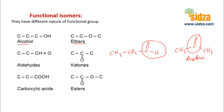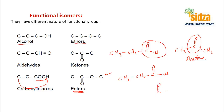Since properties are different, these are functional isomers — molecules with the same formula but different functional groups. Functional isomerism is also possible between carboxylic acids and esters. Esters have a general formula RCOOR and carboxylic acids are RCOOH. For example, CH3CH2CH2COOH is a carboxylic acid and an ester like CH3COOCH3 has the same formula but a different functional group.